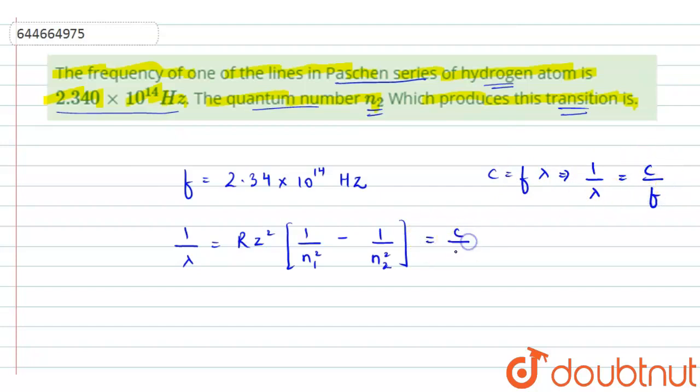So I can equate this equation with C/F. Now the value of this constant R is 1.097 × 10^7 per meter, and the value of Z for hydrogen atom is 1. The atomic number of hydrogen is 1, so 1² will be 1. The value of n1 for Paschen series is 3, so it would be 1/3² = 1/9, minus 1/n2², and this equals C/F.